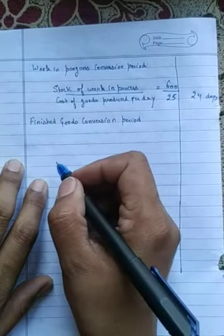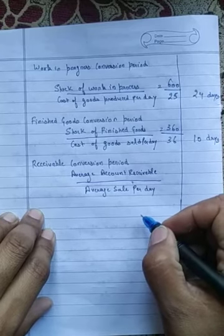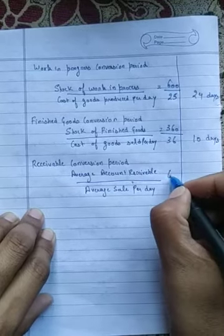Next, we will calculate the receivable conversion period. The formula is: average account receivable divided by average sales per day. In this problem, average account receivable is 600 and average sales per day is 40. So, 600 divided by 40 gives 15 days as the receivable conversion period.